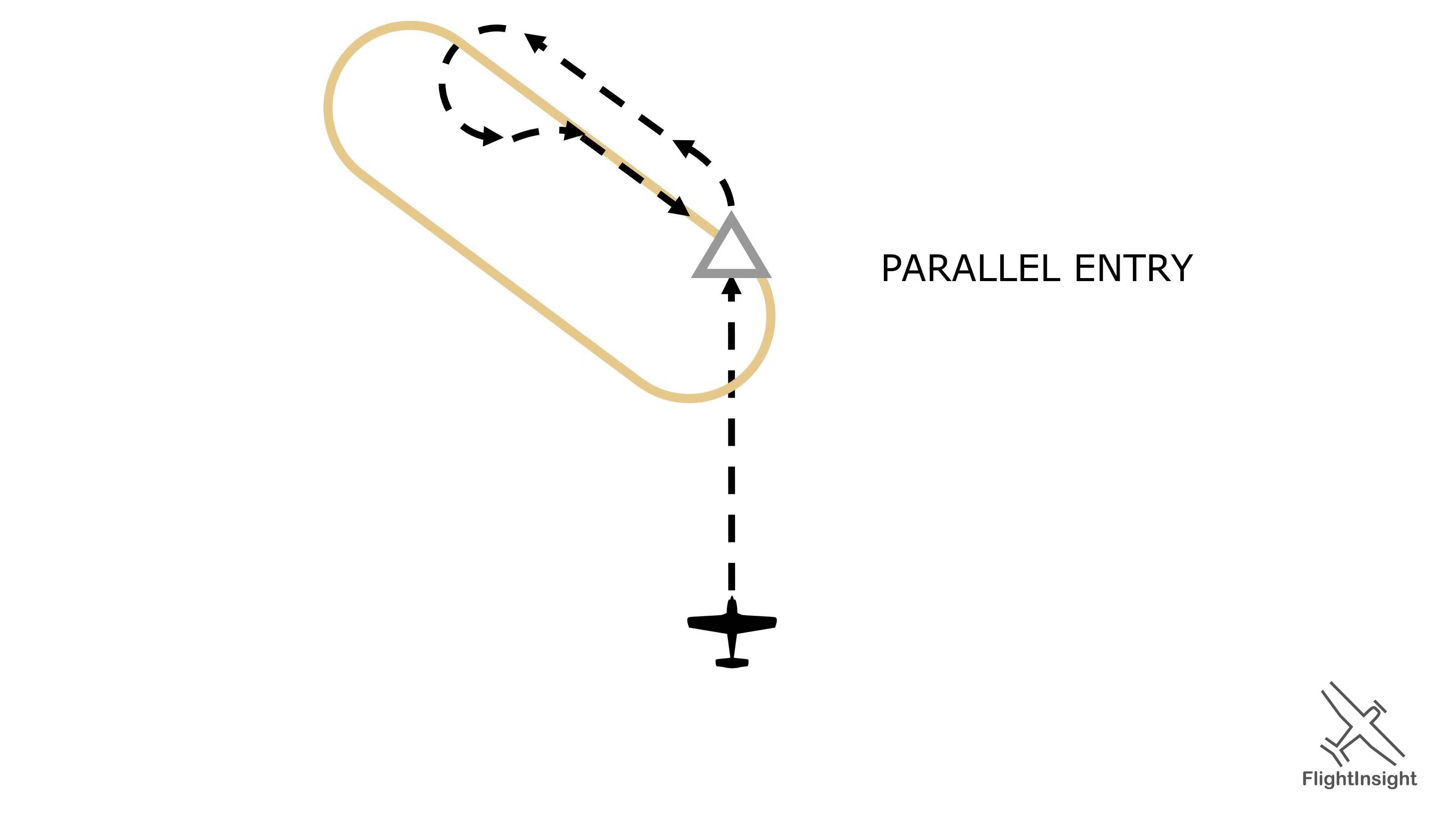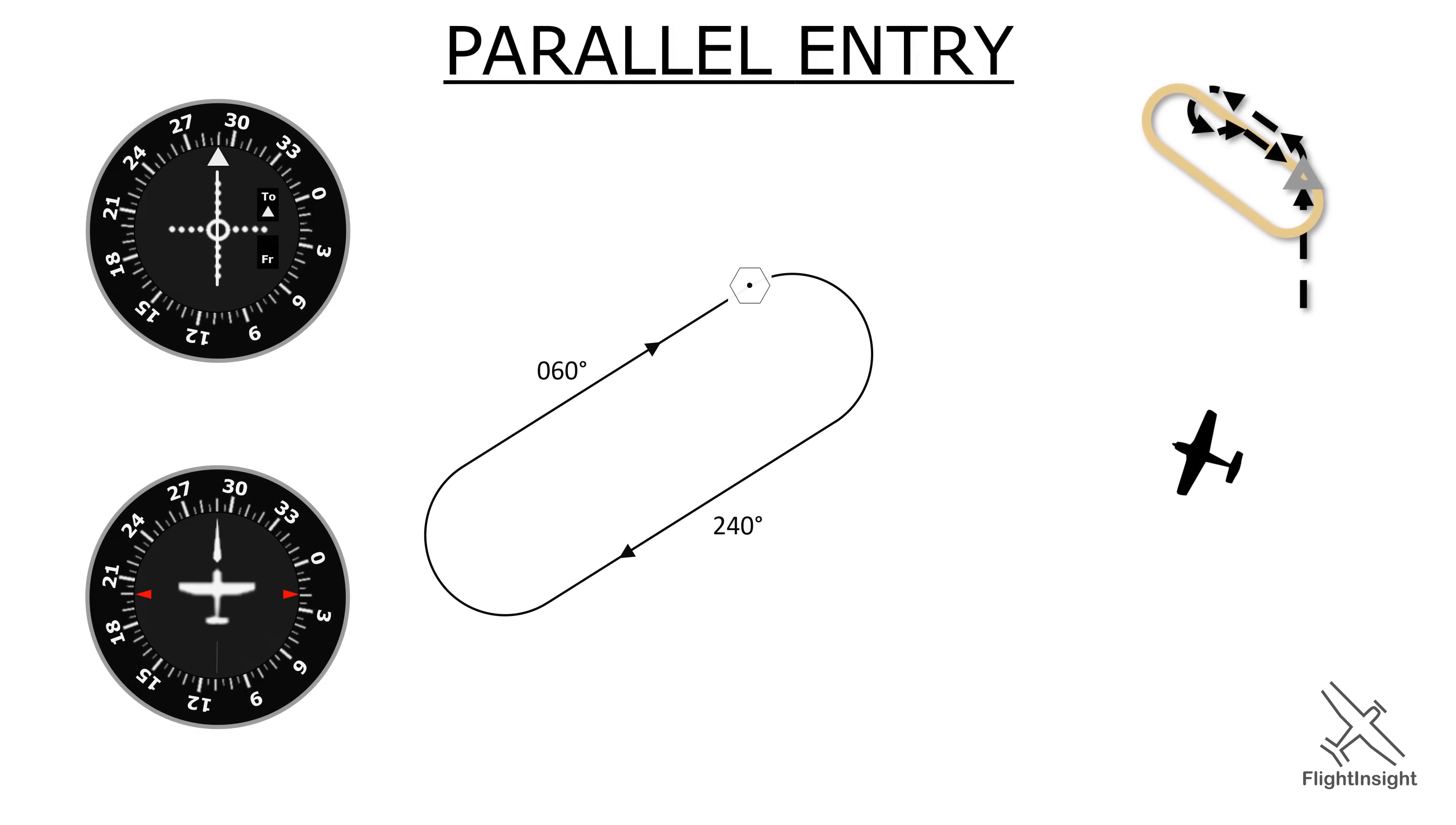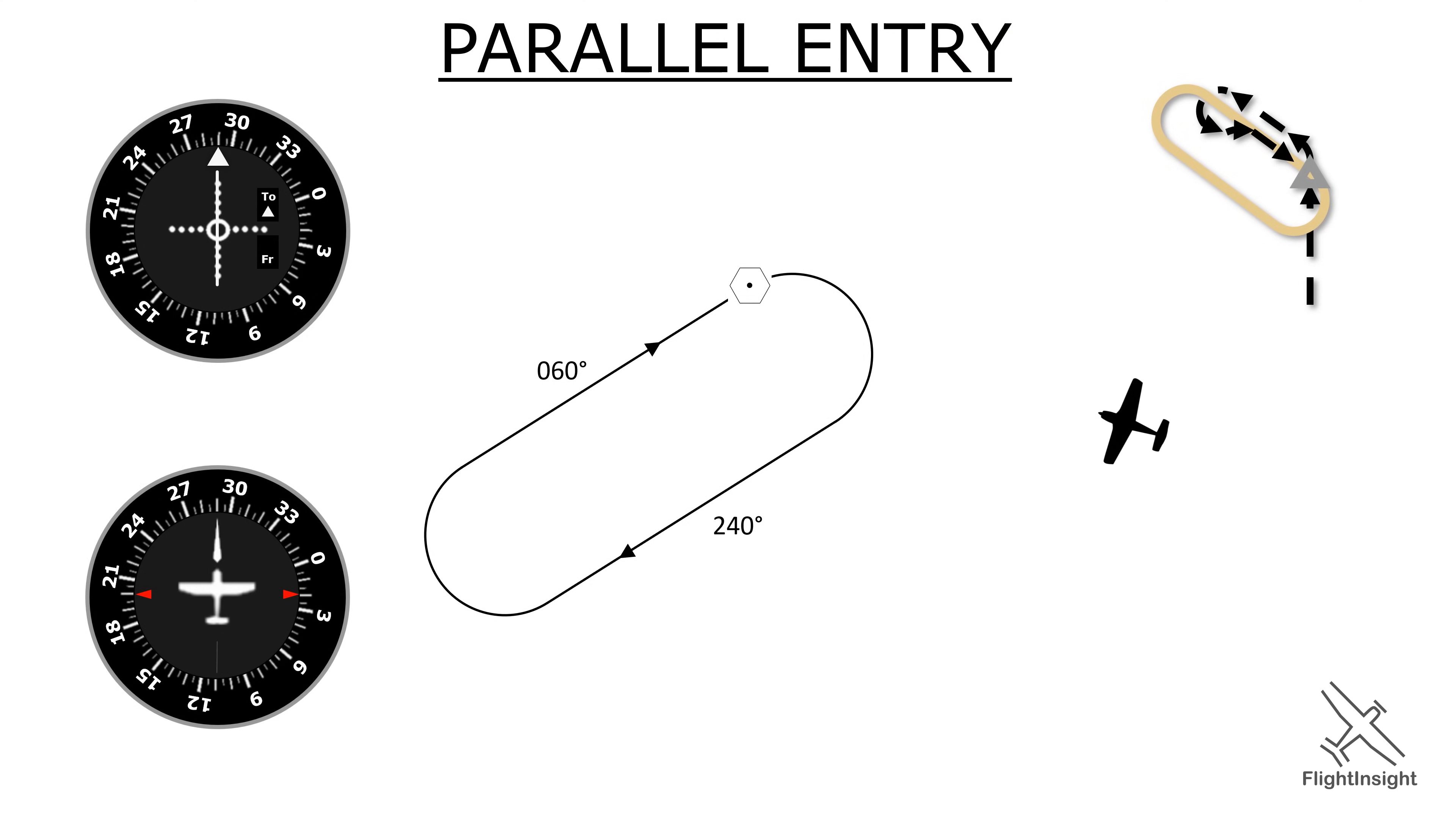It's a bit more involved than the direct entry, so let's see it at work. We'll start by flying the inbound to the VOR from our initial position, keeping the needle centered. Once the flag flips and we've passed the station, we'll turn outbound to a 240 heading.